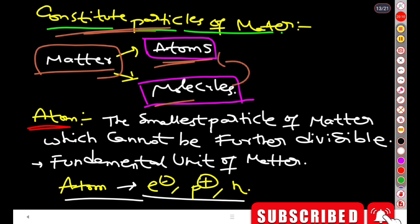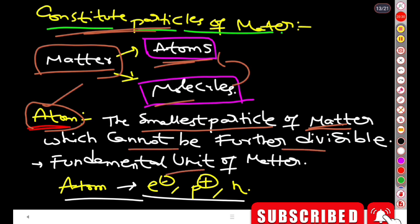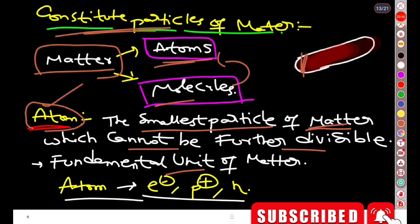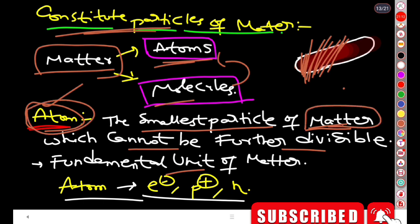Matter is made up of particles — atoms or molecules. An atom is the smallest and indivisible particle. For example, if you cut a chalk piece into smaller and smaller parts, the smallest undivisible particle is called an atom.